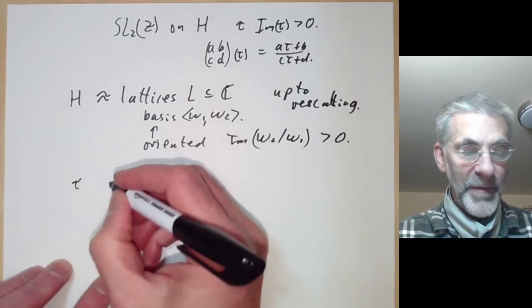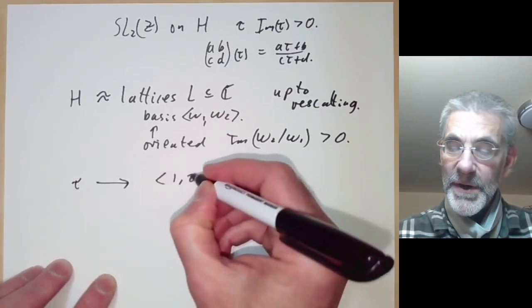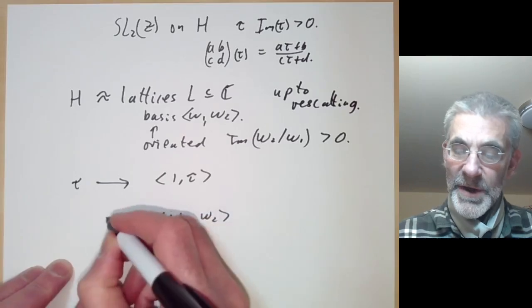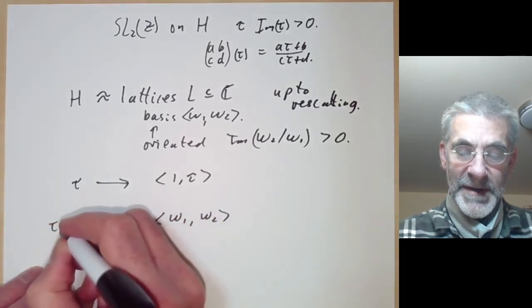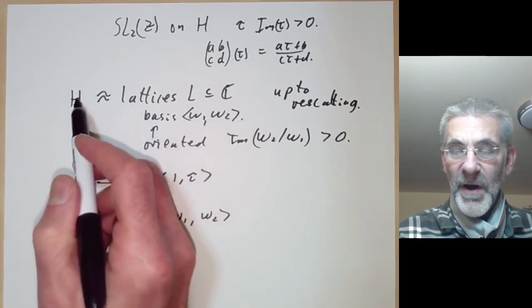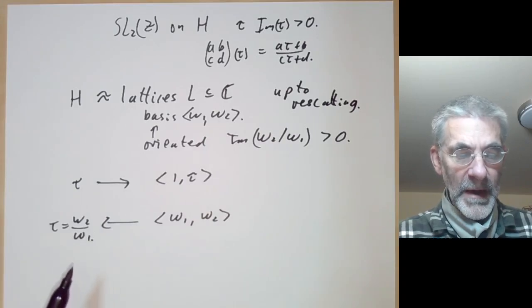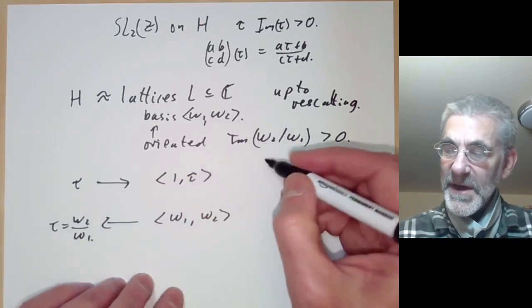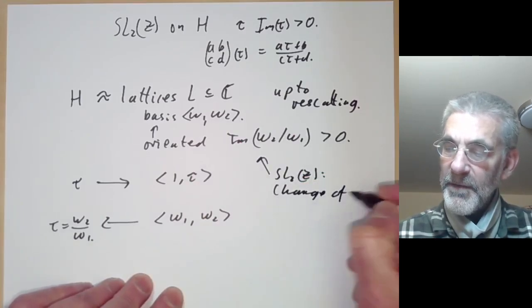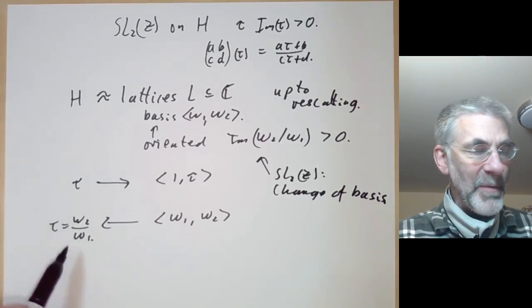And this correspondence is given as follows. First of all if we've got an element tau of the upper half plane, this gives rise to a lattice generated by 1 and tau. On the other hand if we've got a lattice generated by omega-1 and omega-2, we just make that correspond to the vector tau equals omega-2 over omega-1. So elements of the upper half plane are the same as lattices with a basis up to rescaling. So the action of SL2 on this acts as a change of basis.